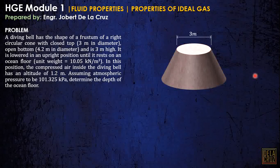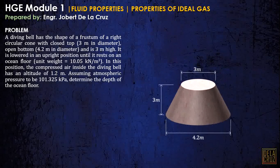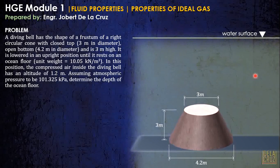So we have this closed top 3 meters in diameter and an open bottom 4.2 meters in diameter and its height is 3 meters. It is lowered in an upright position until it rests on an ocean floor. Assuming that this is the ocean floor and it has a unit weight, the water here has a unit weight of 10.05 kilonewtons per cubic meter.